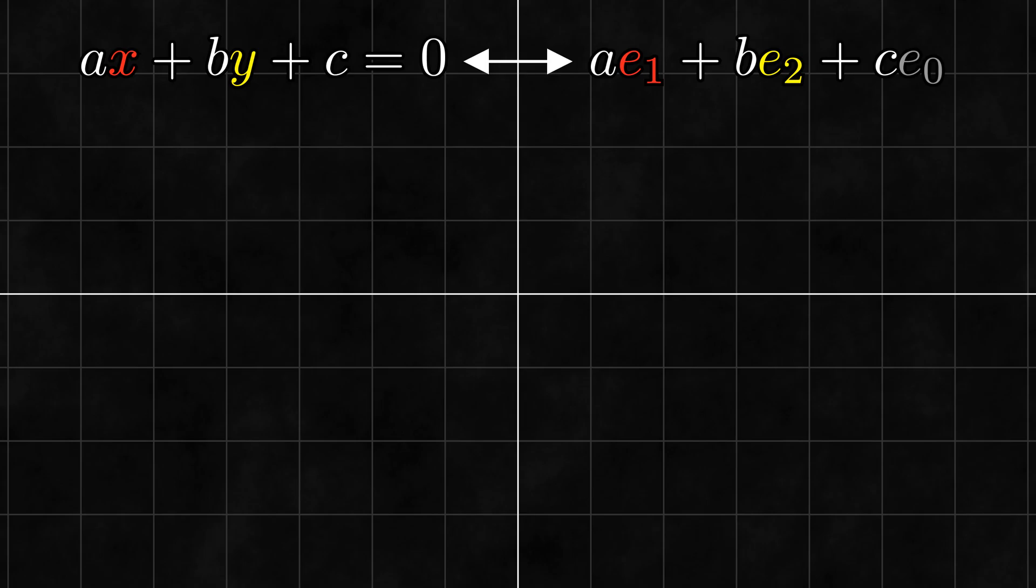Well, e1 and e2 are pretty easy. e1 represents the equation x equals zero, which is the vertical line going through the origin, while e2 represents the equation y equals zero, which is the horizontal line going through the origin. But what about e0? It represents the equation 1 equals zero, which is preposterous. So how should we think of e0 geometrically?